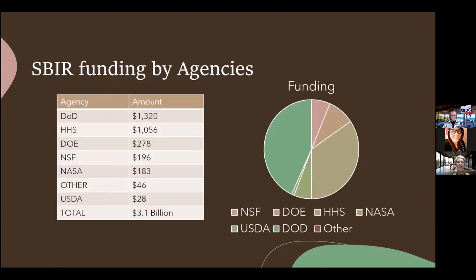We all think of Department of Defense as the number one agency for SBIRs, but HHS — Health and Human Services — is also a really great place to get funding, as is Department of Energy. Of the roughly $1.3 billion in DOD funding, the Air Force has the majority — around $800 to $900 million, which varies and fluctuates. There are also a lot of little agencies making up around $46 million, and those smaller agencies may not be worth the time, especially if they have long timelines.